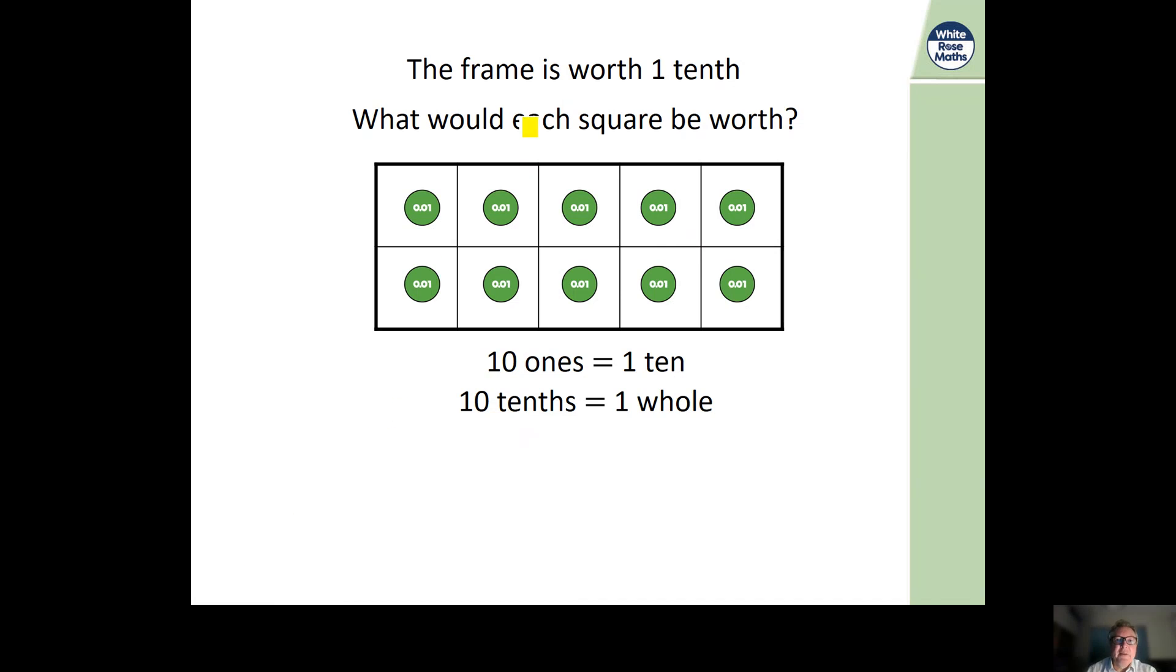So the frame now is worth one tenth, so this whole frame. And the frame has been divided into, again, ten equal segments. So what does this represent? Hundredths. So how many hundredths make one tenth? It's ten.